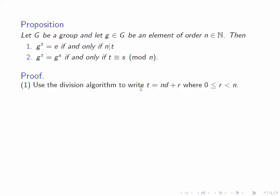To prove part one, we use the division algorithm to write t as nd plus r, where r is between 0 and n minus 1. Then we write that g to the t is g to the dn plus r, which is g to the n to the power d times g to the r by the rules of exponents we've proved earlier, and that of course is equal to g to the r.